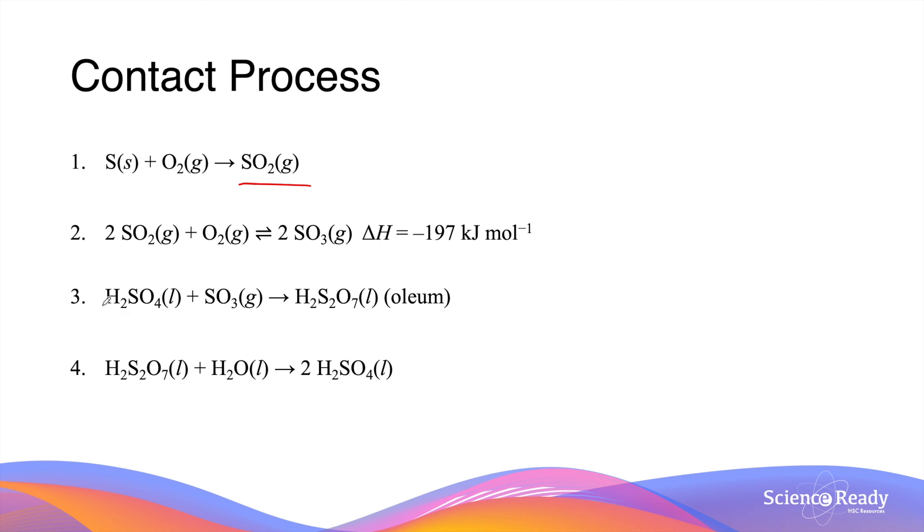In the third step, the sulfur trioxide reacts with an existing amount of sulfuric acid to produce a chemical which we call oleum. And in the last step, the oleum will react with an abundant amount of water to form a large amount of sulfuric acid that's highly pure and concentrated. We will now look at these four reaction steps in a more diagrammatic way.